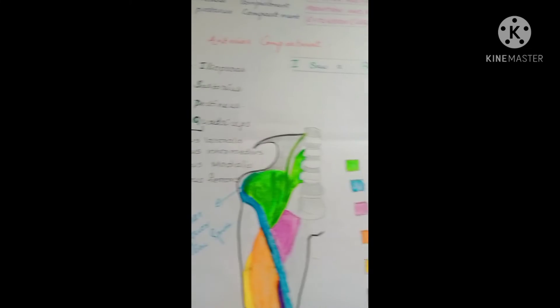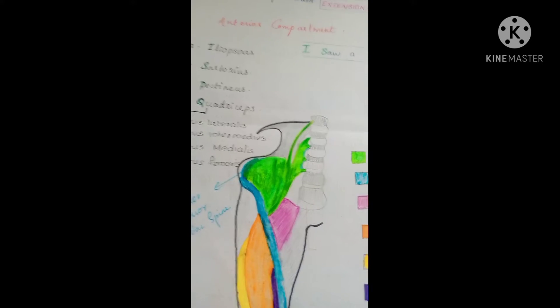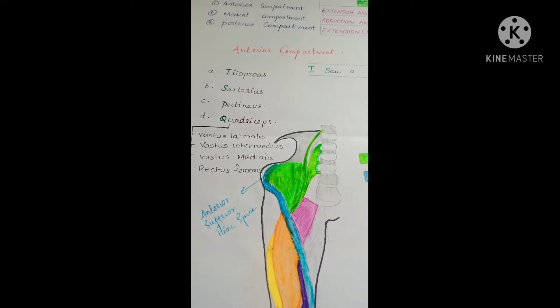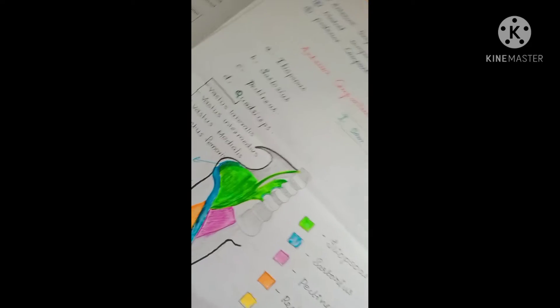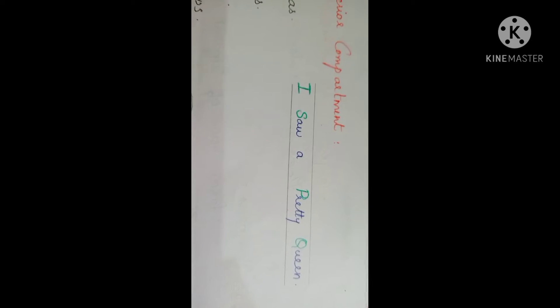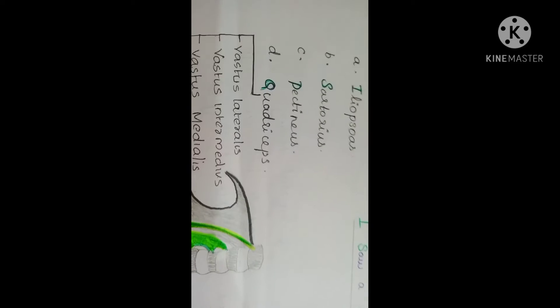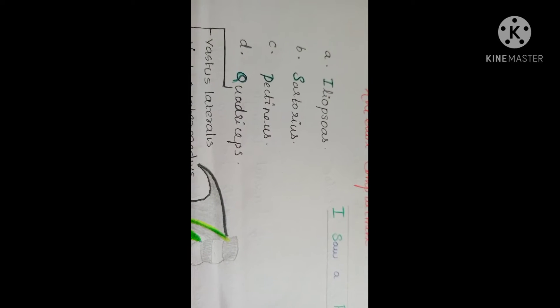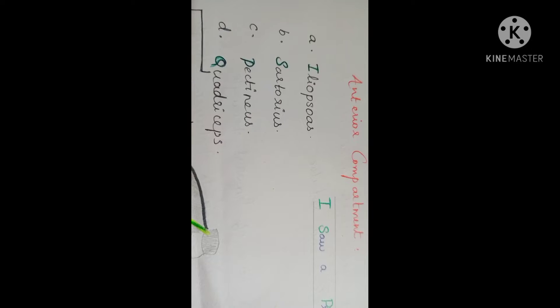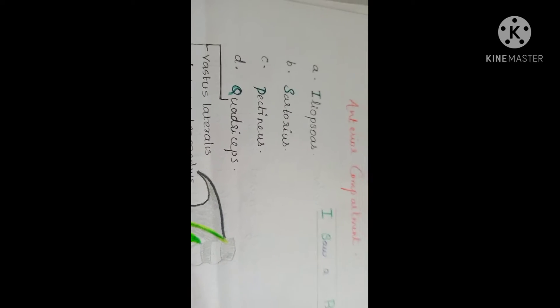In the anterior compartment, we have 4 muscles. Use the mnemonic: Iliopsoas, Sartorius, Pectineus, and Quadriceps — Iliopsoas, Sartorius, Pectineus, Quadriceps.